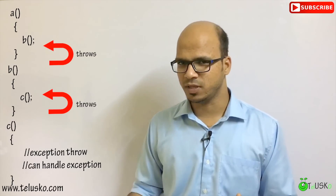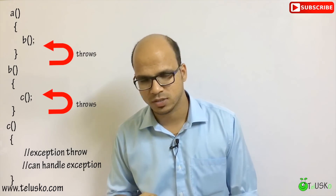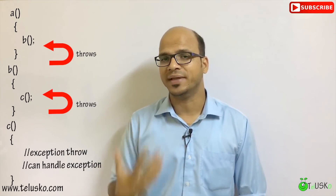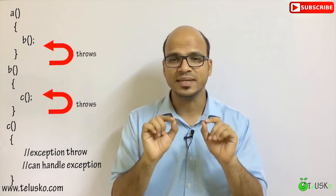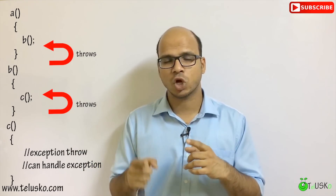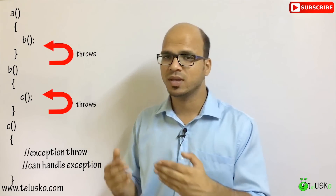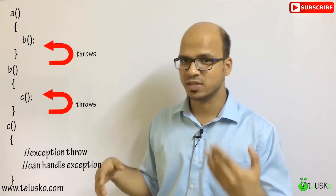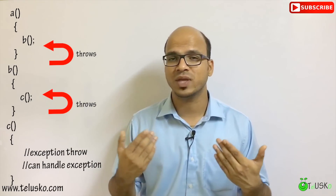Let's say we have three methods: Method A, B, and C. Method A calls Method B, and Method B calls Method C. If C has an exception, C can handle it himself using try-catch, or C can send that exception to B because B is good at handling exceptions. B then has two choices: handle it with try-catch, or throw it to A. So we can handle exceptions using the throws keyword — it sends the exception up the call stack. We can also create our own exceptions using the throw keyword. So we have throw, throws, and finally — we'll discuss all those in the practical implementation.